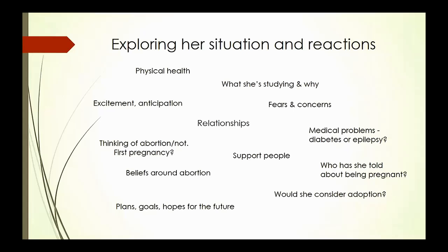Ask if they are thinking about abortion. If they are, ask whether this is their first pregnancy. If they say no, ask what happened in the first pregnancy. They may have had a pregnancy and miscarried, or a child being brought up by someone else. Don't assume it is their first pregnancy even if they are a student — they might have had a teen pregnancy while still at school, which is a really big thing and will colour what's happening now.